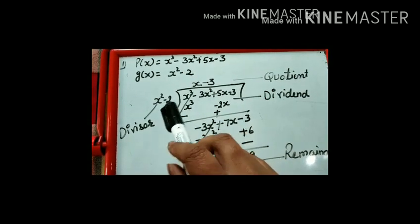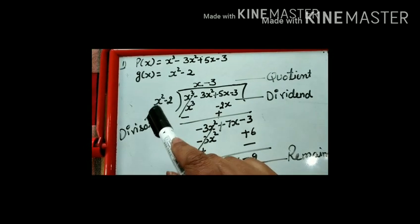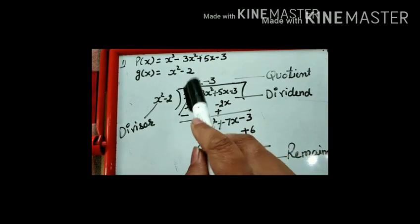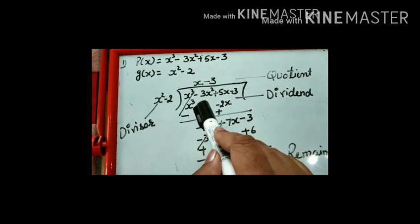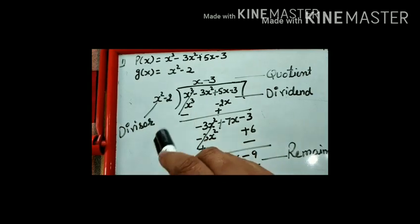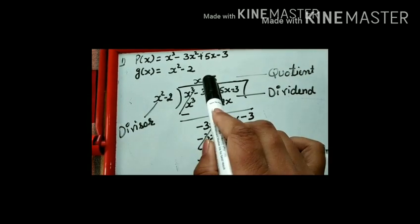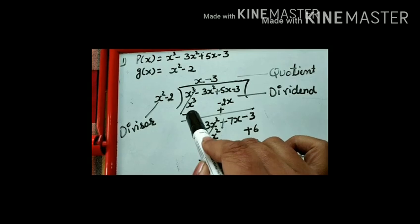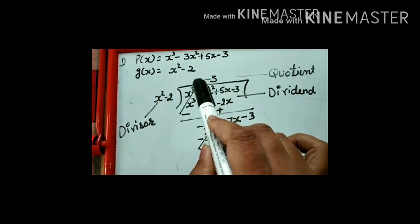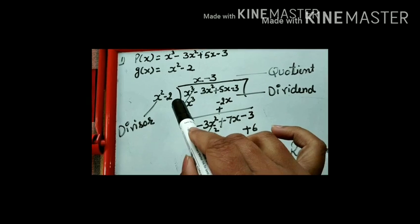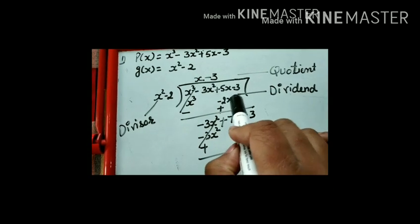Now we have to see the first term and the first term. We have x², but we need x³. So we multiply: x² into x gives x³. We multiply x into -2 which gives -2x, and we keep that below.